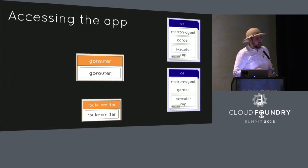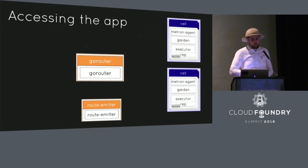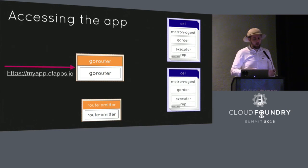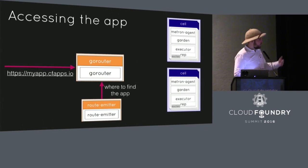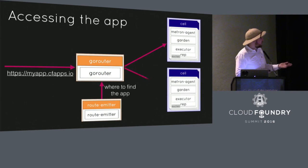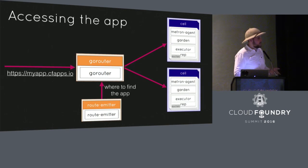Our application is now running in Cloud Foundry, so we need to access it from the outside. A request comes in and hits the Go router. The Go router is continually updated by the route emitter about where to find the application. With two Diego cells, the router forwards requests — the first request goes to cell one, the second to cell two. This is a straightforward round-robin workflow, very similar for TCP routing as well.